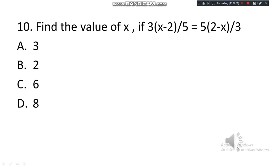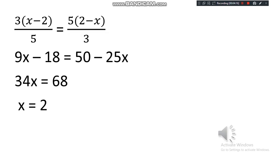Question number 10. Find the value of x if 3(x minus 2)/5 is equal to 5(2 minus x)/3. Option A: 3, Option B: 2, Option C: 6, Option D: 8. Cross multiplying: 9x minus 18 equals 50 minus 25x. Therefore 34x equals 68, giving x equals 2. The answer is 2.